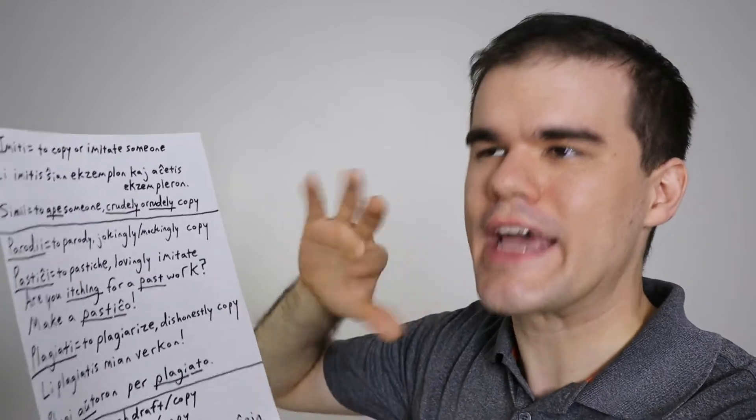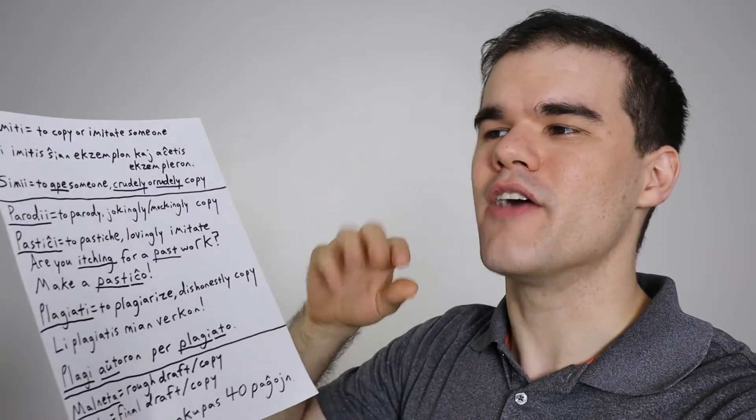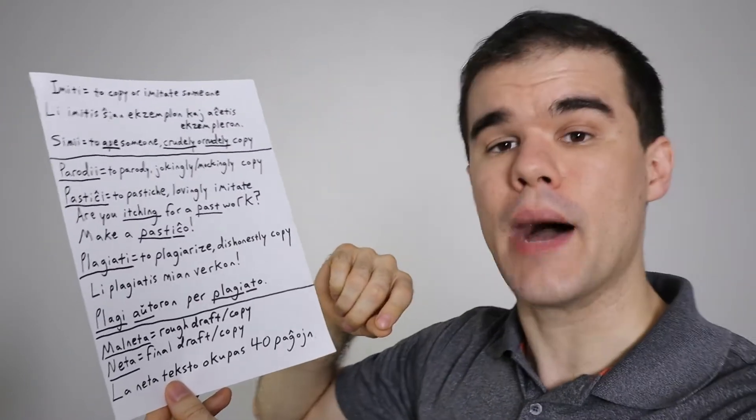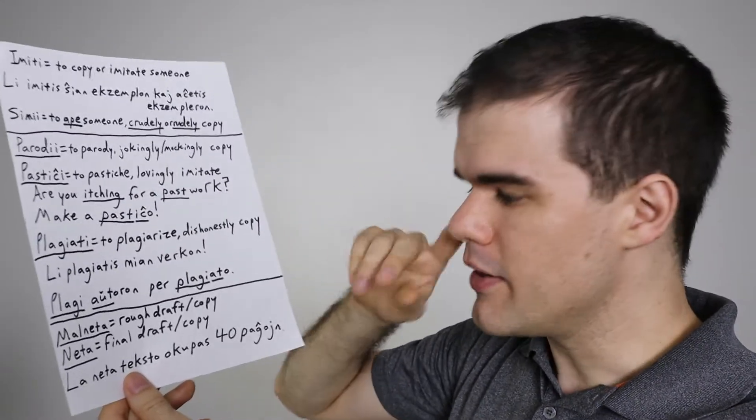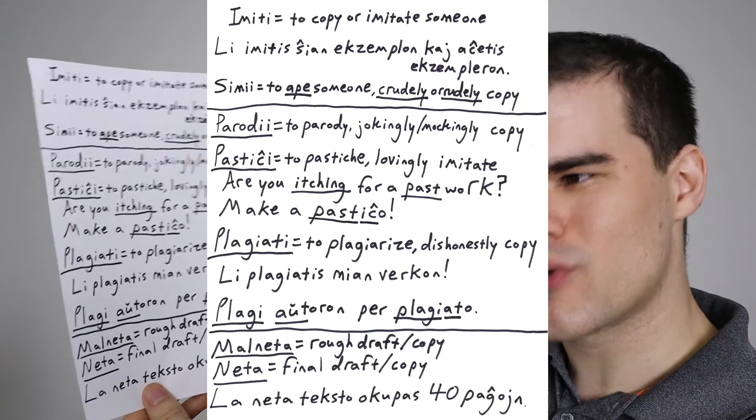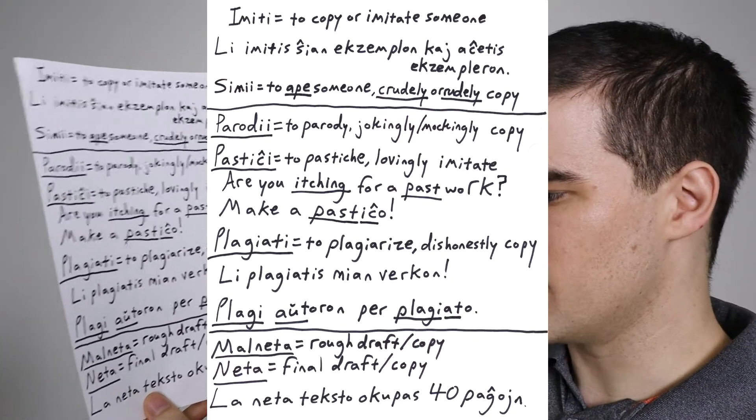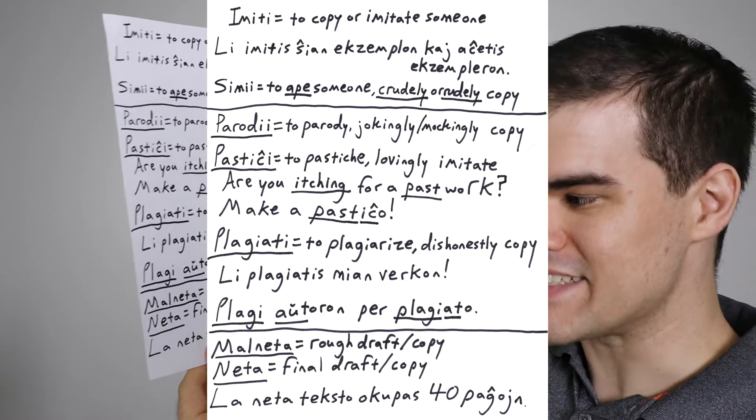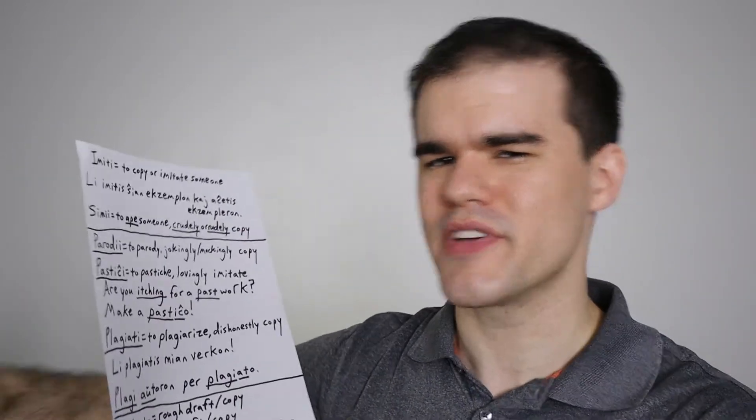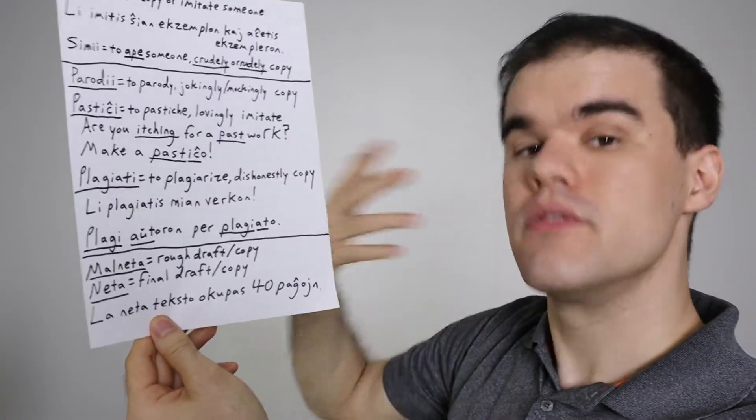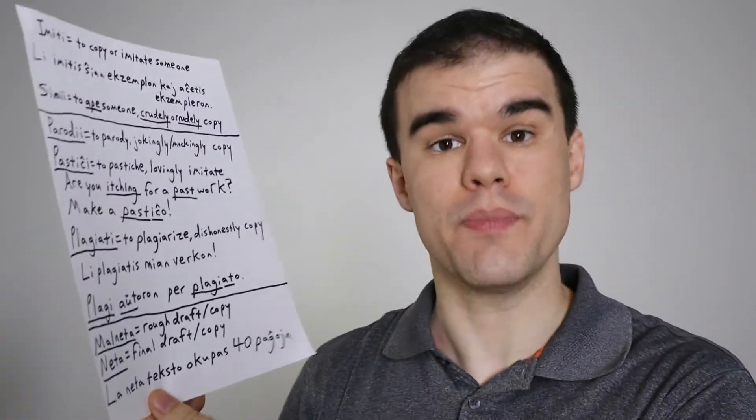Down here we have a couple words that are sort of lightly related. When I looked at my dictionary for anything to do with copy, they said, oh, well, a clean copy would be netta or netto. Clean copy? You mean like a final draft compared to a rough draft. That's really how we would look at these words in English. But I suppose maybe in Britain or something they say a clean copy or an unfinished copy of something. Draft is probably the best way though. Malnetta is a rough draft. It's still working out the details. There's notes and scribble marks all over it. And then netta, that is, we figured it out. It's all finalized and this is the last version of it. The final version or final copy is netta. And that goes along with the idea of your net profits compared to your gross profits and all those things. I'm not an accountant. I don't know all that. But, la netta texto occupas quardec pajoin. The final draft text took up 40 pages for the book.